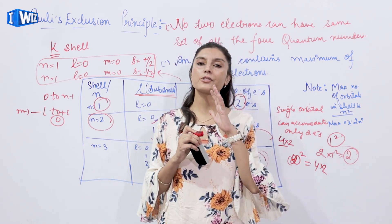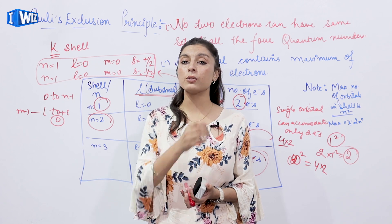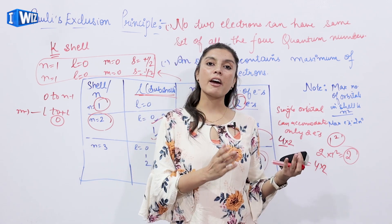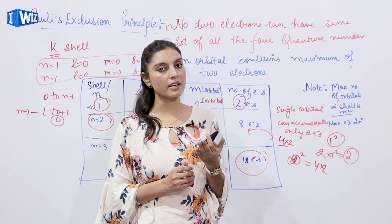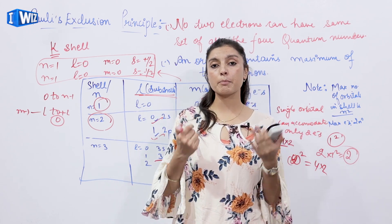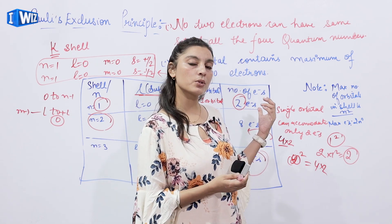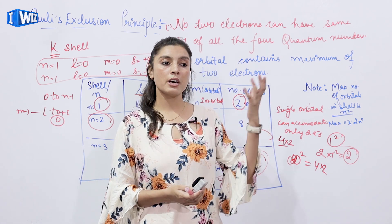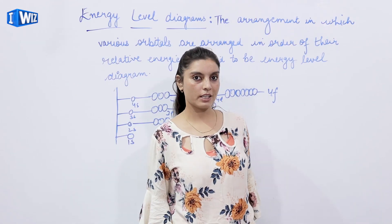To summarize Pauli's Exclusion Principle: any electron present in an orbital has four quantum numbers — n, l, m, s — and they cannot all be the same; they must vary at least in one. Also, one orbital can have a maximum of only two electrons. Students, please keep in mind that this concept is a basis for understanding higher concepts. It is usually asked in exams for three marks — 'explain Pauli's Exclusion Principle with examples.'